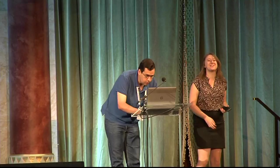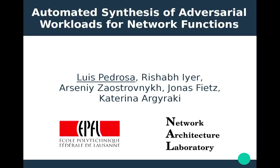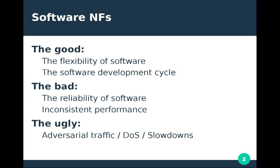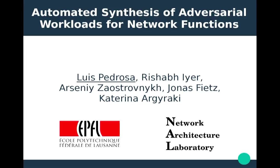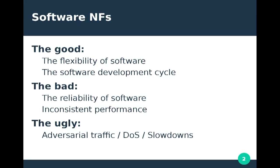Thanks for the kind introduction. I'm Luis Pedrosa from EPFL in Switzerland. Today I'll be talking about our recent work in automatically generating adversarial workloads. We all know the advantages and disadvantages of software networking: on the plus side, we have the flexibility and decreased time to market of the software development cycle, but this comes with the typical problems of software — increased likelihood of bugs and inconsistent performance on commodity hardware. An adversary can create carefully designed traffic that slows down network functions, leading to denial-of-service attacks.